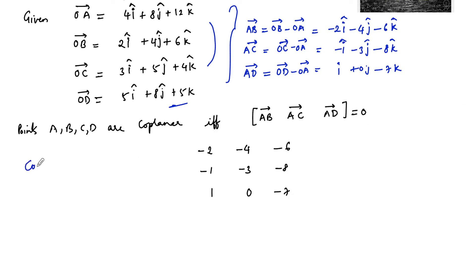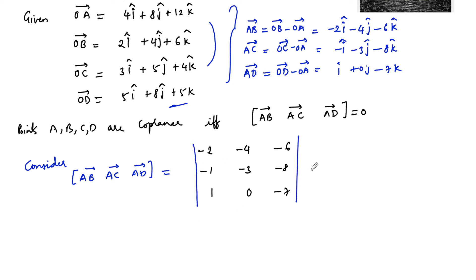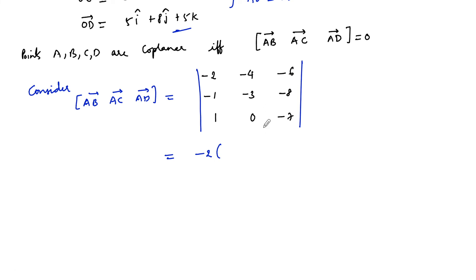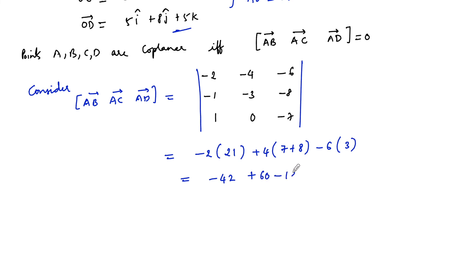Consider the scalar triple product [AB, AC, AD], which equals the determinant of those three vectors. Expanding: −2 times (21 − 0) plus 4 times (7 + 8) minus 6 times (0 + 3) = −2(21) + 4(15) − 6(3) = −42 + 60 − 18 = 0.